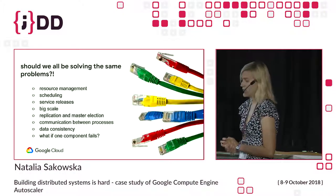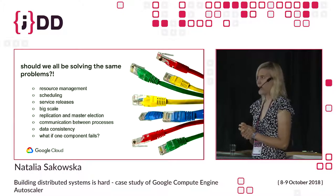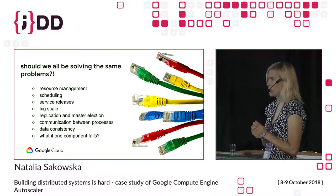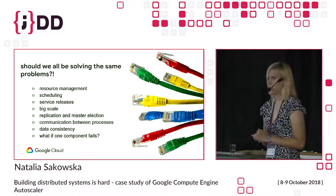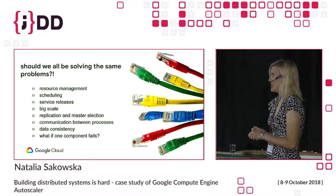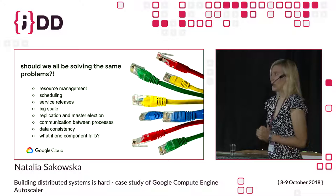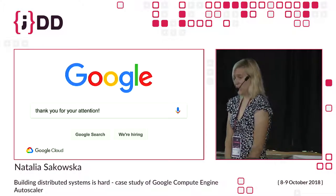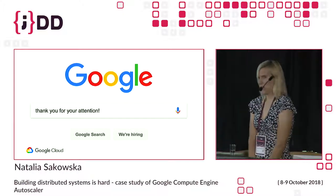Summing up, I have mentioned quite many problems we encountered when building distributed systems at Google. I have explained how we try to solve them, and that we prefer to solve these problems once and generally — not have all engineers solve the same problems over and over again, but rather concentrate on their services and the work that is interesting to them. The message is clear: we want you to work on what you want to work on, and not on what you have to work on. I hope you enjoyed — thank you very much for your attention, and I am open to questions now.